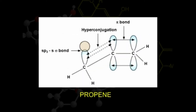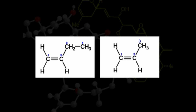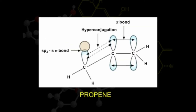However, because of hyperconjugation in propene, we get more resonating structures since there are three carbon-hydrogen sigma bonds at the alpha position with respect to the carbon-carbon double bond. Therefore, propene is more stable compared to 1-butene, which has only two carbon-hydrogen sigma bonds at the alpha position with respect to the carbon-carbon double bond. Therefore, propene is much more stable than butene.